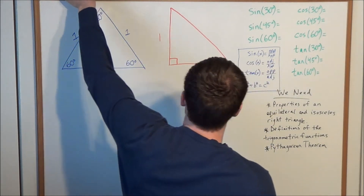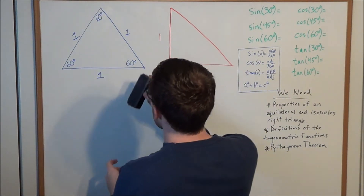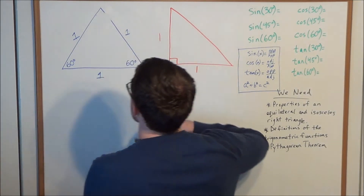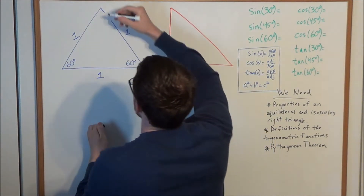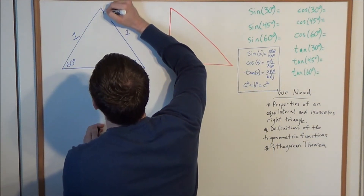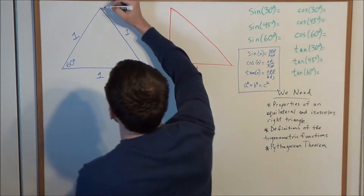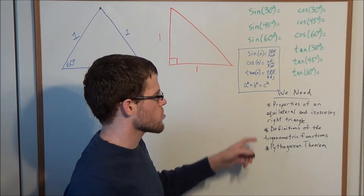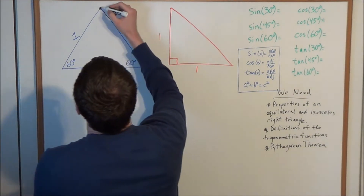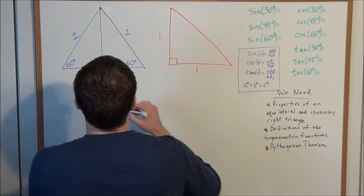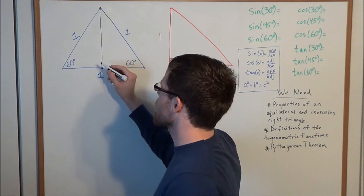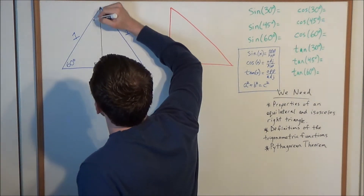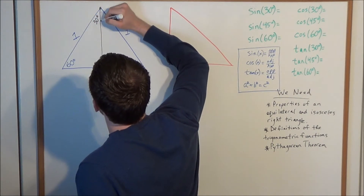Let's start with the equilateral triangle. We can go ahead and set each side equal to one, which will simplify the work, though it works for any side length. Now we need to construct a perpendicular bisector. The properties of an equilateral triangle mean that when we drop down this perpendicular line, it bisects the top angle into 30 degrees and 30 degrees.